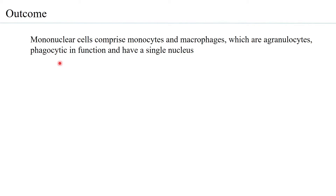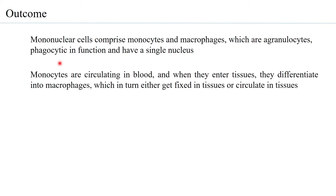Monocytes are circulating in blood, and when they enter tissues they differentiate into macrophages, which in turn either get fixed in tissues or they circulate in tissues. If they get fixed in tissues, they are also considered to be histiocytes.